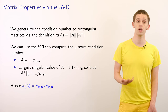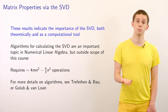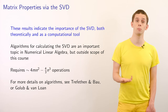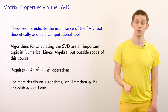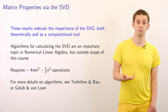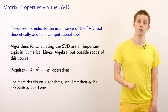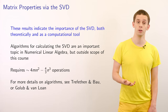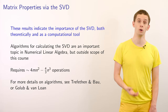This also generalizes our previous calculations of condition number for diagonal matrices. These results indicate the importance of the SVD, both theoretically and as a computational tool. Algorithms for calculating the SVD are an important topic in numerical linear algebra, though outside the scope of this course. For an n by n matrix, it requires on the order of 4n times n squared minus 4/3 n-cubed operations to compute. For more details on algorithms, see textbooks such as Trefethen and Bau, or Golub and Van Loan.